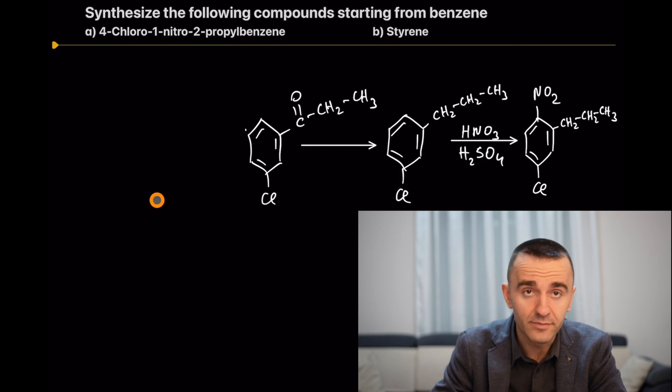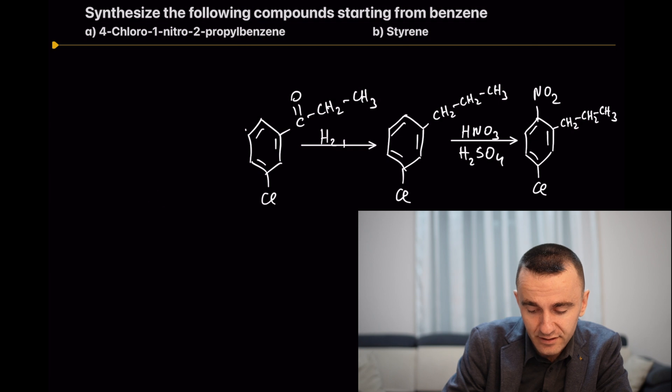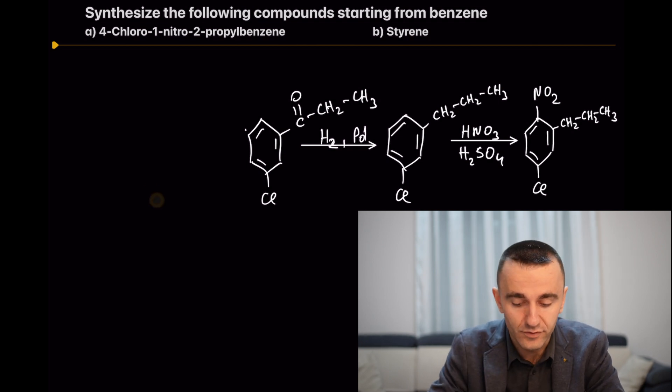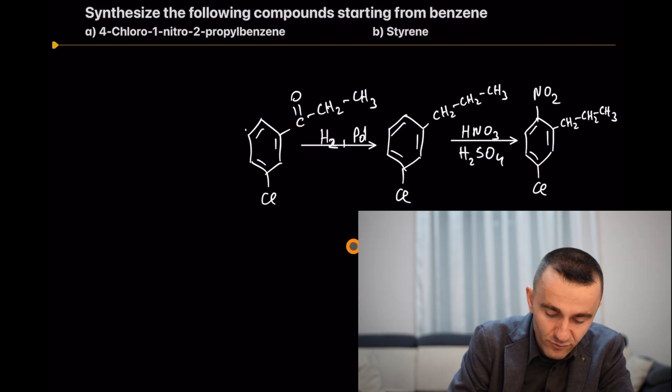How are you going to reduce this carbonyl group? As we learned from my previous video, we used hydrogen with palladium catalyst to reduce this carbonyl group that was directly connected with a benzene ring. You can use H2 with Pd. Now let's move backwards again.